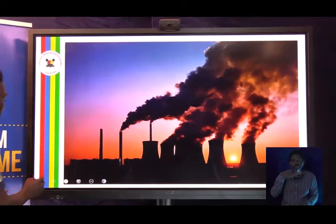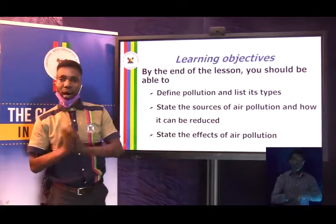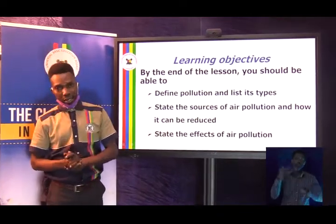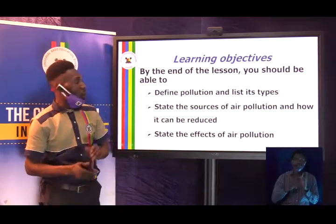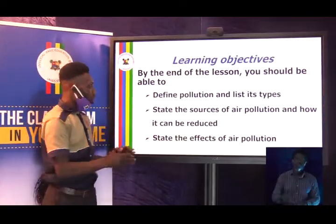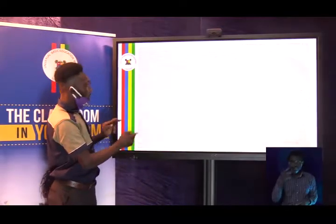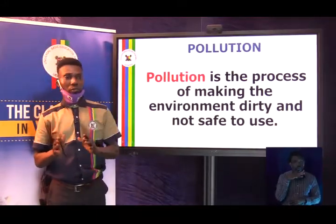That tells us we need to talk about pollution. In the first diagram we saw how the land was dirty and littered; in another we saw dirty water; likewise the air was polluted. That leads us to our topic for today: Pollution. By the end of today's lesson you should be able to define pollution and list its types, state the sources of air pollution and how it can be reduced, and state the effects of pollution.